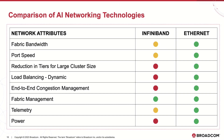By that reduction, along with all the other capabilities we have — like load balancing, end-to-end congestion management, telemetry — by reducing the tiers in the network, you're reducing power and reducing cost. That is the benefit you get with Ethernet.